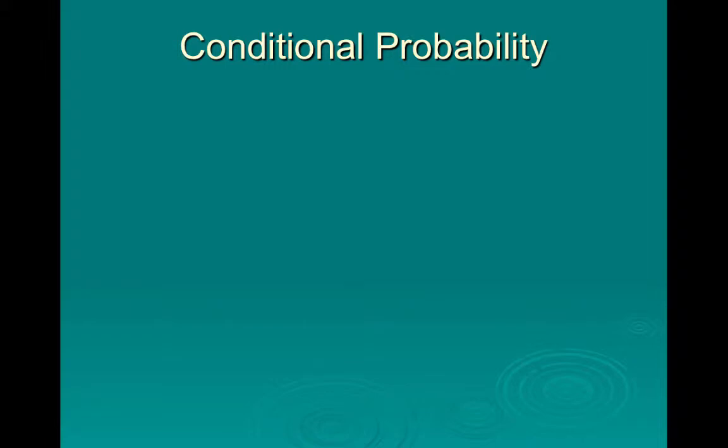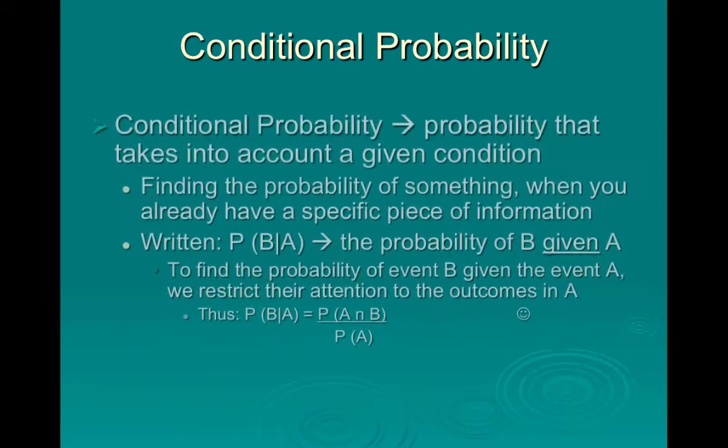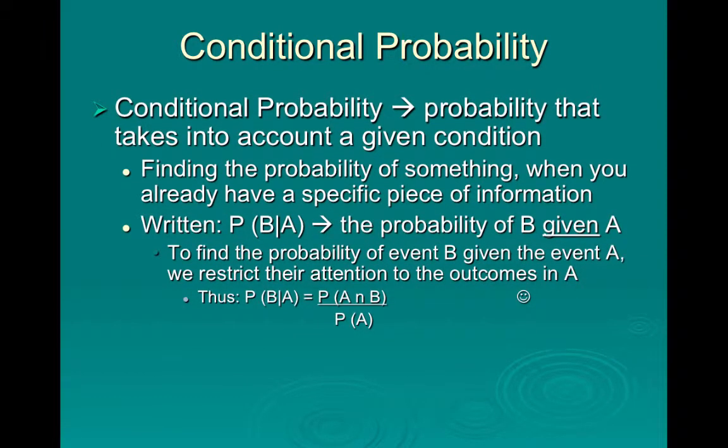Continuing with chapter 15, we're going to talk about conditional probability today, as well as the general multiplication rule. Starting with conditional probability — conditional probability is a probability that takes into account a given condition, so it's probability that's based off of something you already know.